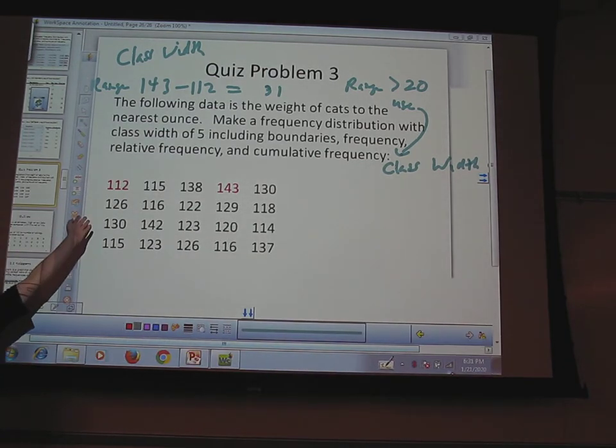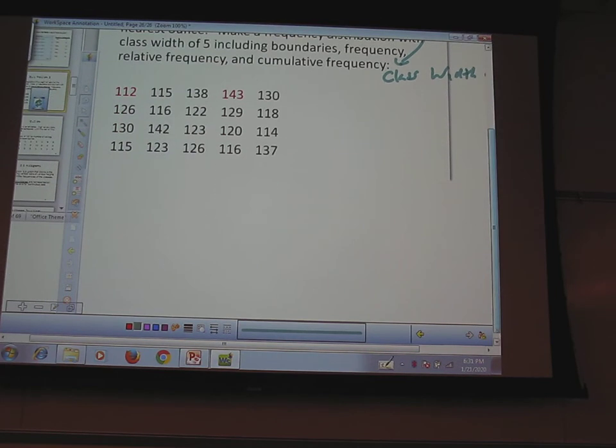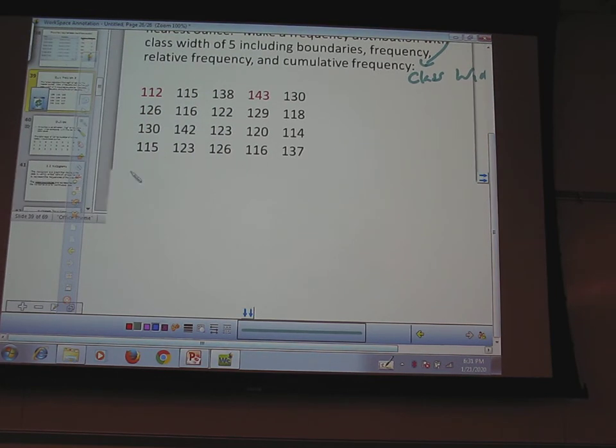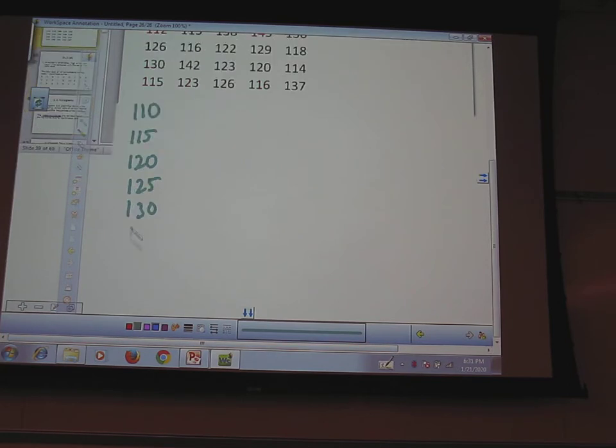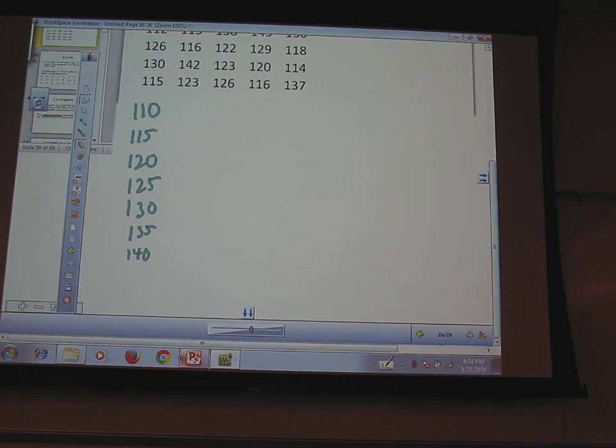Do I want to start with 112? No, it's unclear. I want to find the five below 112. What's the five below 112? 110. So start with 110. What's the next one? Find all your lower class boundaries: 110, 115, 120, 125, 130. Oh no, we're not. 135, 140, 145. Oh look, 145, that's bigger than my max. You guys see that? So I don't need it.